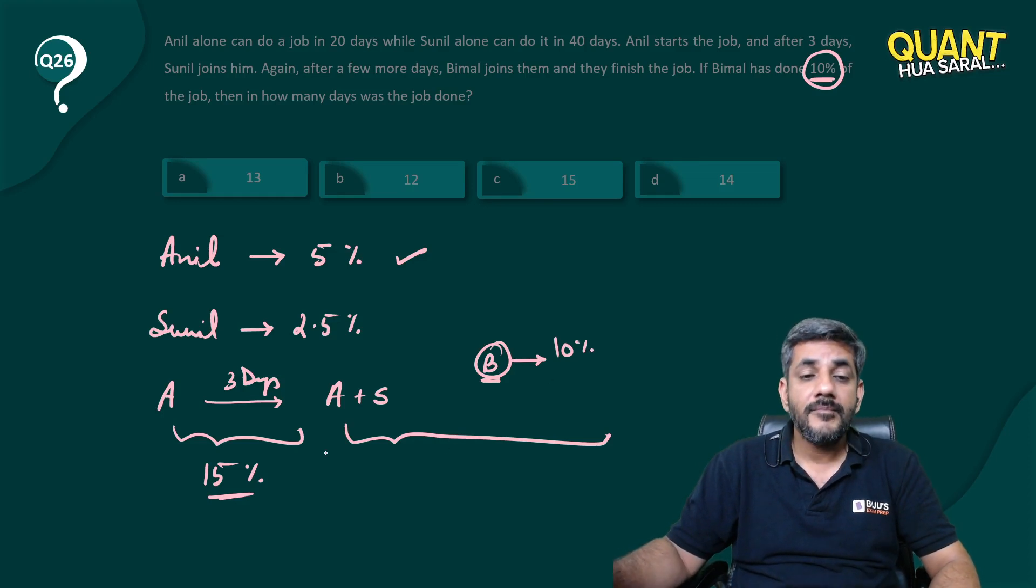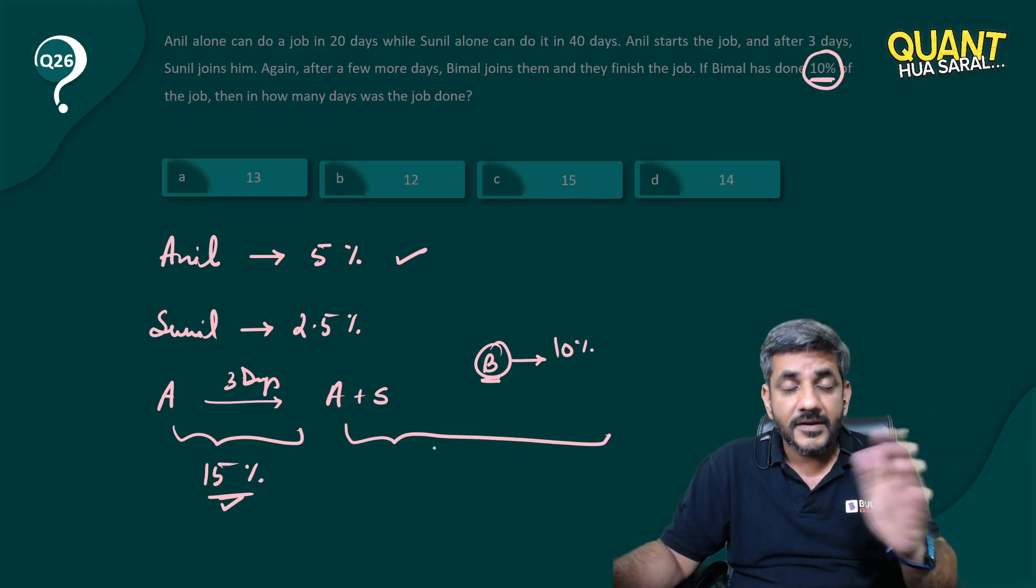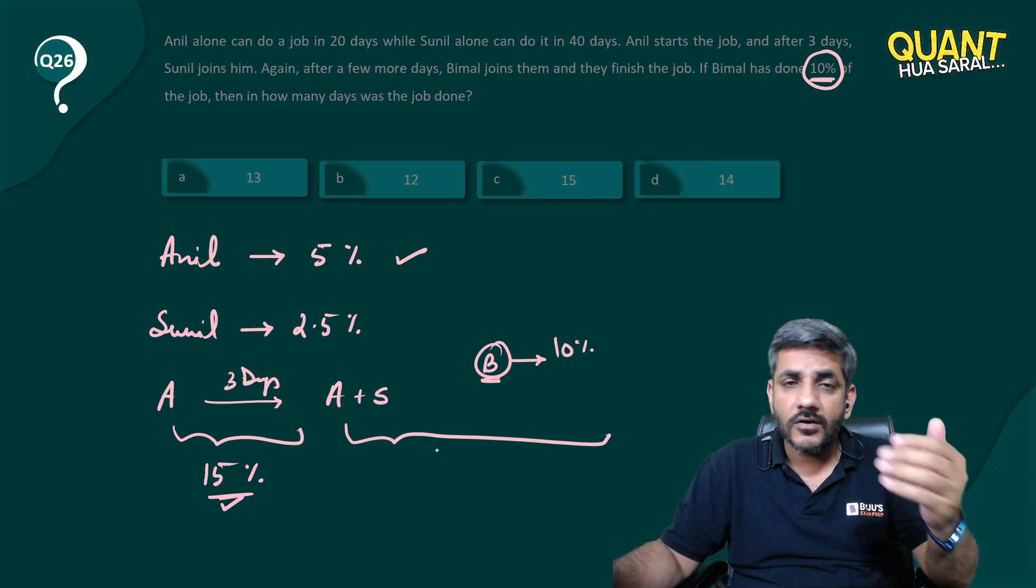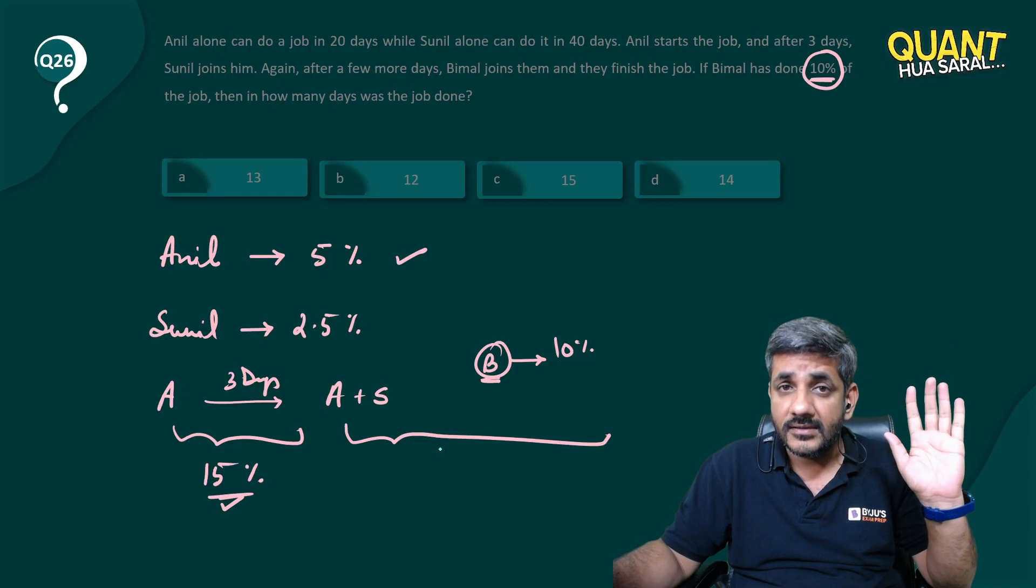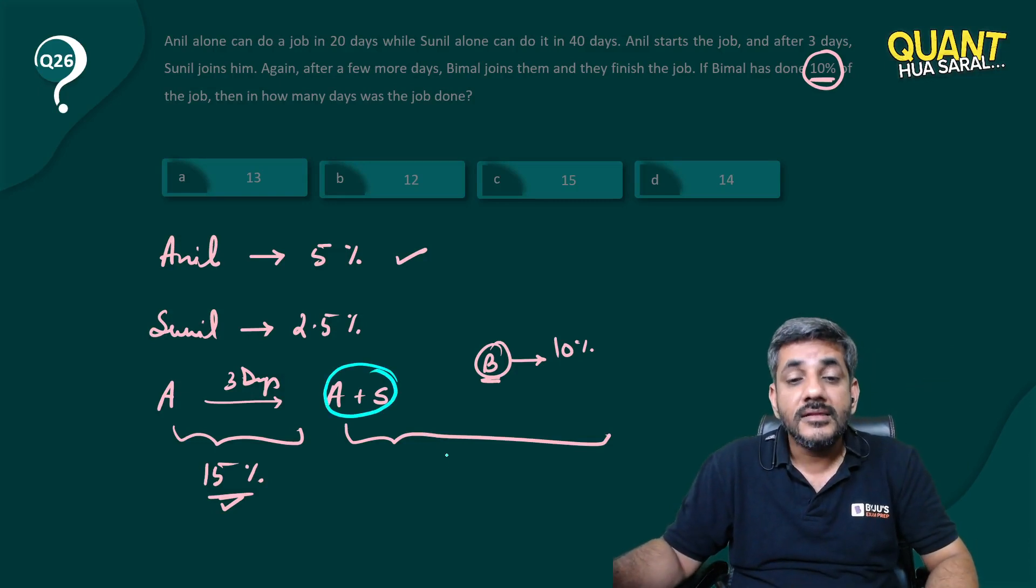If 10% of the job has been done by Bimal, 15% of the job has been done by Anil initially. So 15 and 10, 25% of the job is done in these areas. So that means when Anil and Sunil were working, they must have done 75% of the job.